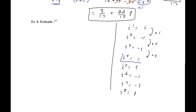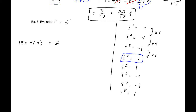Every four powers of i, it cycles back to 1. So to evaluate i to the 18, divide 18 by 4: that's 4 times 4 with a remainder of 2, so we write i to the (4×4 + 2). Using exponent properties, that's (i to the 4th) to the 4th power times i squared. i to the fourth is 1, so this equals i squared, which equals negative 1.